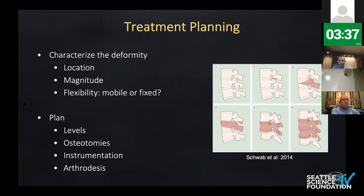The plan needs to include levels, the osteotomies, instrumentation, exact configuration, how many rods, and what you're doing for bone. This is the Schwab classification of posterior osteotomies. Grade one and two are posterior column osteotomies, and grades three through six are increasing grades of three-column osteotomies. We really reserve those three-column osteotomies for the most severe, fixed deformities. Whenever possible, trying to restore alignment through a more harmonious correction using mobile disc spaces is always desired and in general less invasive.